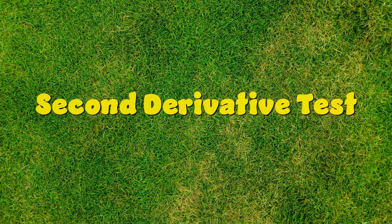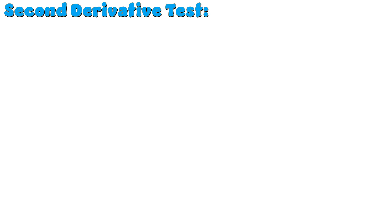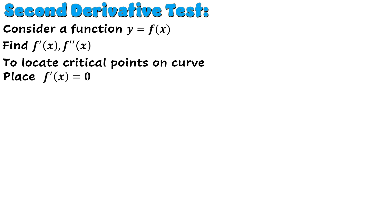In this video we shall discuss the second derivative test for a function of one variable and investigate how it is used to find critical points — that is, maxima, minima, and points of inflection. Consider a function of one variable y = f(x). We find its first derivative f'(x) and second derivative f''(x). To locate critical points, we set f'(x) equal to zero.